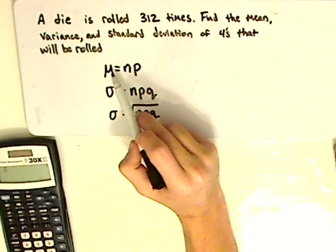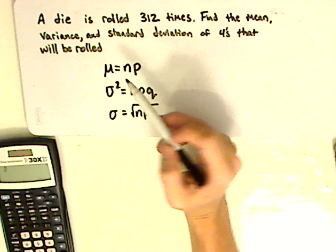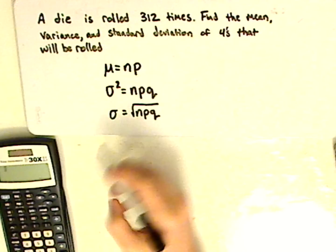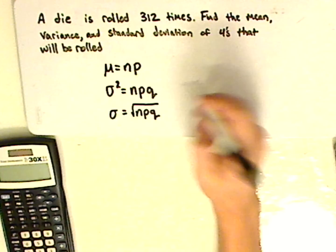Now, remember what the mean is for a binomial distribution, or probability distributions in general. It's the expected value. All right, so let me find all these.